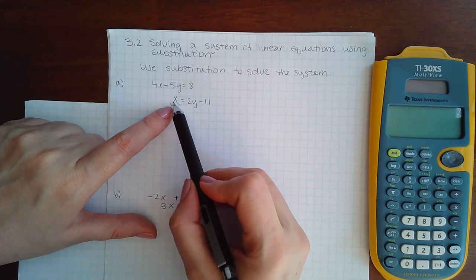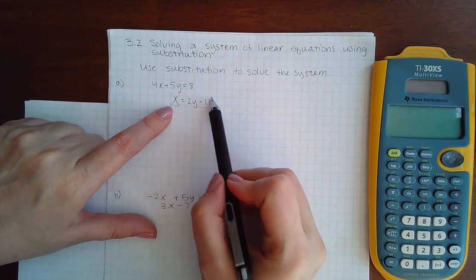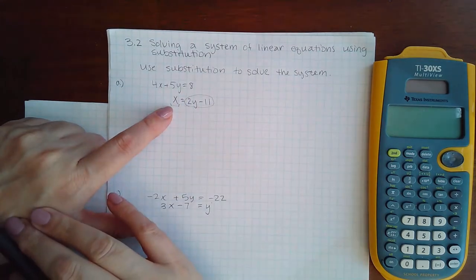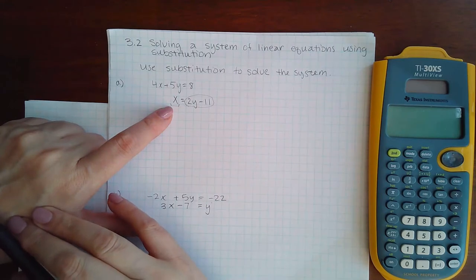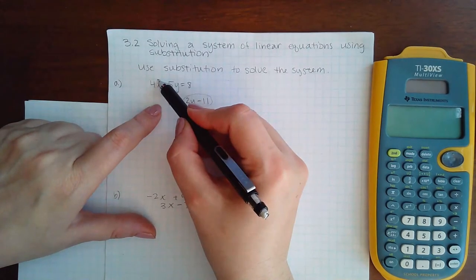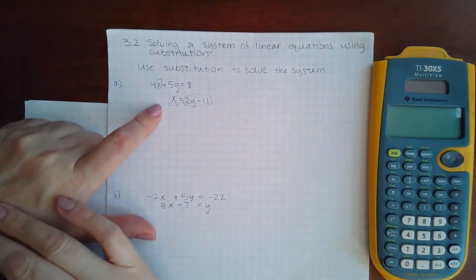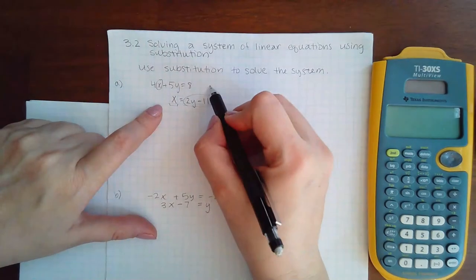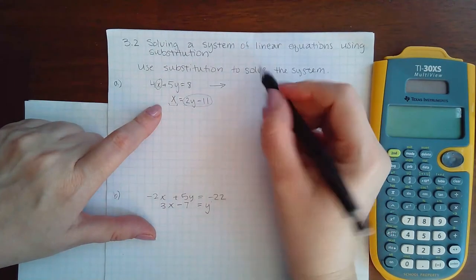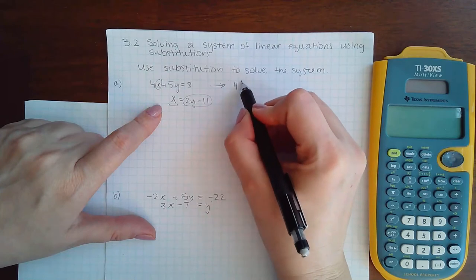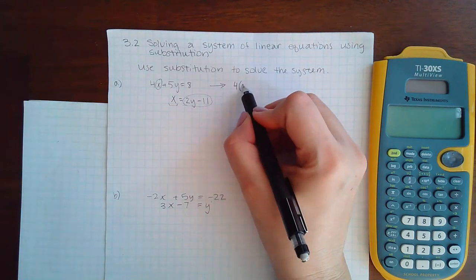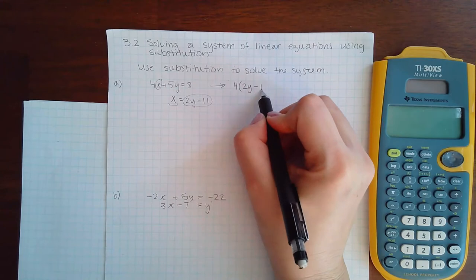that x is equivalent to the expression 2y minus 11, which means in this equation, instead of using the x, I can use the expression that x is equivalent to. So instead of using x here, I can say 4 times 2y minus 11.